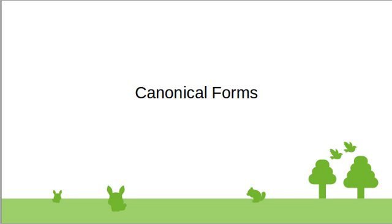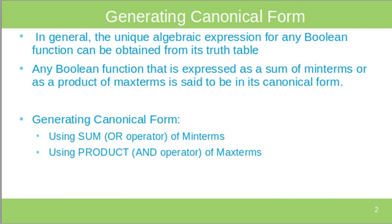About canonical forms: any boolean function can be obtained from its truth table. If we have the truth table, we can find the boolean function from it. A boolean function expressed as a sum of minterms or as a product of maxterms is said to be in its canonical form.